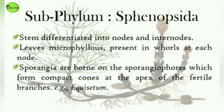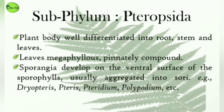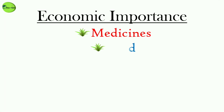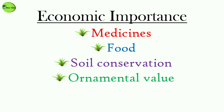Finally, Pteropsida. In Pteropsida, the plant body is well differentiated into roots, stem, and leaves. Their leaves are megaphylls and pinnately compound. The sporangia develop on the ventral surface of the sporophylls, usually aggregated into sori — the spore-producing receptacles. Examples are Dryopteris, Pteris, etc.